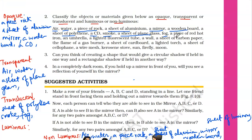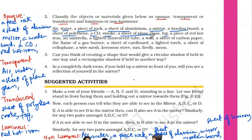A piece of red hot iron is categorized as opaque. And since red hot iron produces light of its own, it is also luminous. Others are all non-luminous. An umbrella is obviously opaque — it protects us from the sun, so it has to be opaque; otherwise sunlight would pass through.